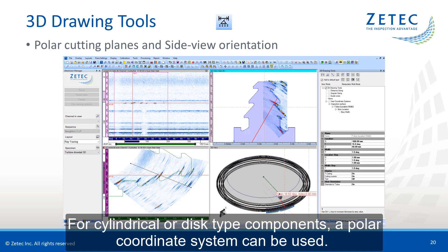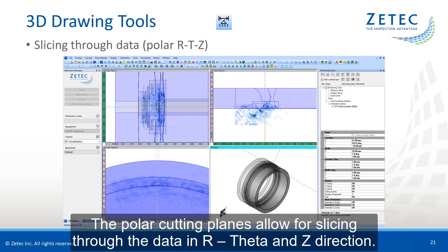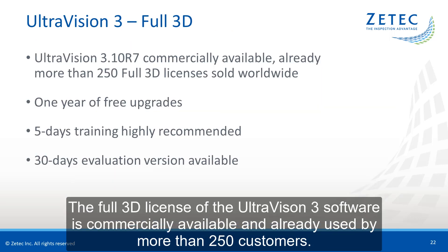For cylindrical or disk-type components, a polar coordinate system can be used. The views can be oriented to the side view of the attached ray to show the incident plane. The polar cutting planes allow for slicing through the data in R, theta, and Z direction.